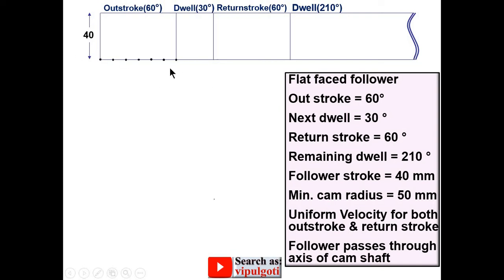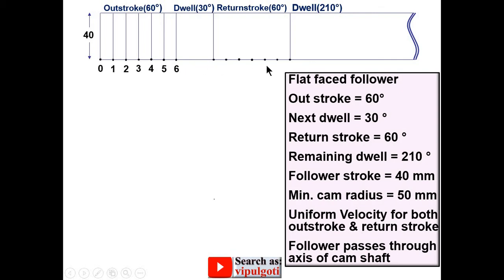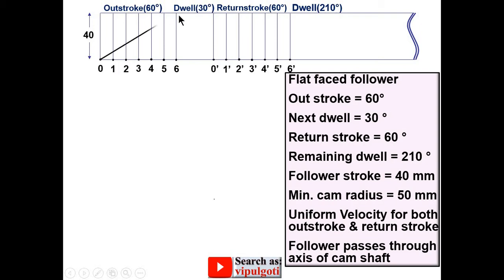Divide the outstroke into 6 equal parts and label them 0, 1, 2, 3, 4, 5, 6. Draw vertical lines through all these points. Similarly, divide the return stroke into 6 equal parts and label them 0', 1' up to 6', and draw vertical lines through those points. Since uniform velocity is given for both outstroke and return stroke, the displacement diagram should be a straight inclined line for both. For the dwell periods it should be a horizontal line. The follower returns to its original position at the end of the return stroke.